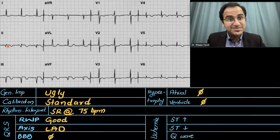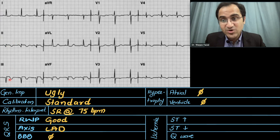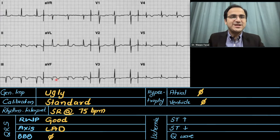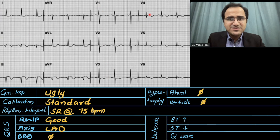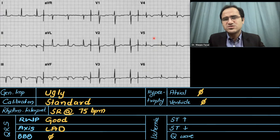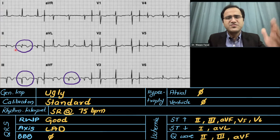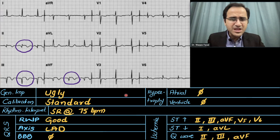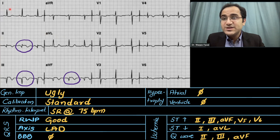For ischemia: lead 1 has no ST segment elevation. Lead 2 shows subtle ST segment elevation; lead 3 shows very prominent ST segment elevation. AVF shows ST segment elevation. So we have ST segment elevation in leads 2, 3, and AVF. Leads V1, V2, V3, V4 do not show significant ST segment elevation. V5 and V6 show possible T-wave inversion or mild elevation. The prominent ST elevation is in leads 2, 3, AVF — this is an inferior wall MI.